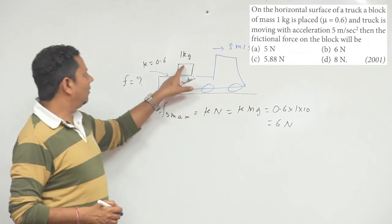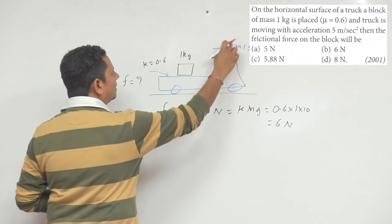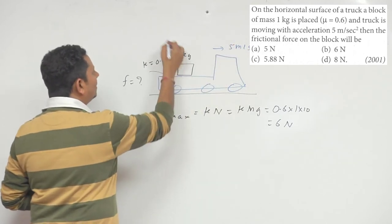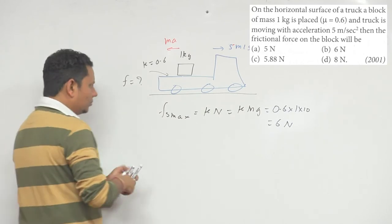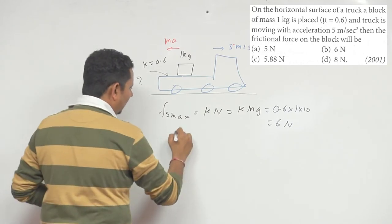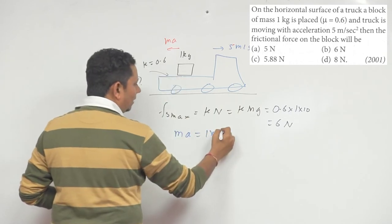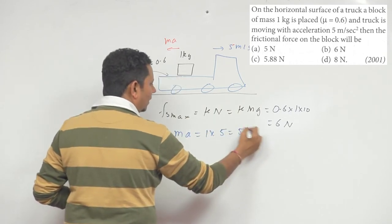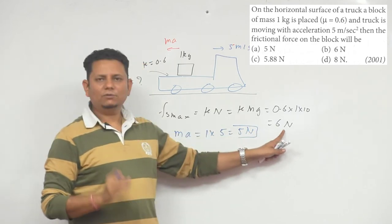Now if we talk about this block, since it has acceleration of 5 meter per second square, there will be a force acting backward on it, which you call pseudo force. The value of this pseudo force acting backward will be m multiplied by a, which is 1 multiplied by 5, that is 5 newton.